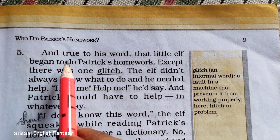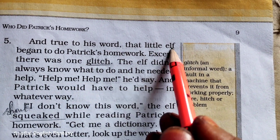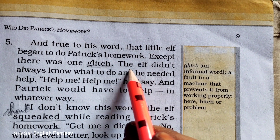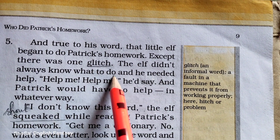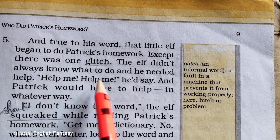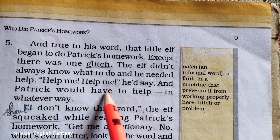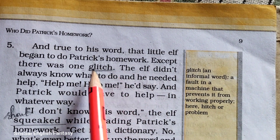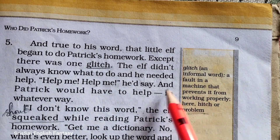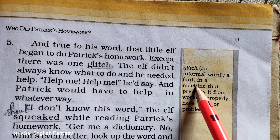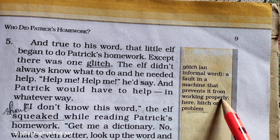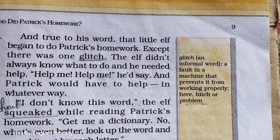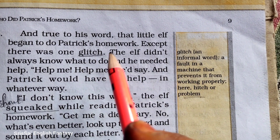Let's continue with the fifth paragraph. True to his word, that little elf began to do Patrick's homework. Except there was one glitch. The elf didn't always know what to do and he needed help. Here the word 'glitch' means problem. Actually, glitch means a fault in a machine that prevents it from working properly. So glitch is a problem where it will not allow the machine to work properly.